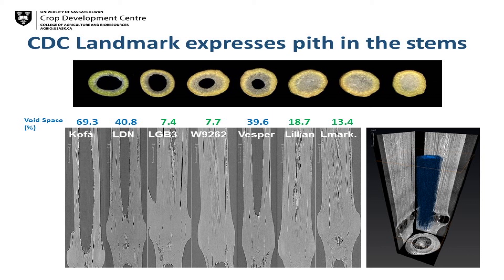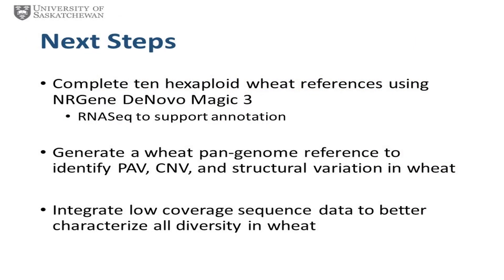For next steps: we want to complete the 10X-deployed wheat references using NRGene DeNovo Magic version 3, adding 30X coverage of 10X data. We'll generate RNA-seq data to support annotation of unique and dispensable genes we're identifying, and ultimately generate a wheat pan-genome reference to better characterize presence-absence, structural, and copy number variation. In our own program we're also integrating low-coverage sequence data to better characterize diversity in our breeding program, including wild relatives we've been crossing with to introduce useful phenotypic variation.